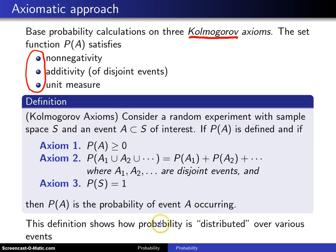This definition will show you how probability is distributed over the various events, for example, A or A1, A2, etc., and that's where you get the term probability distribution.